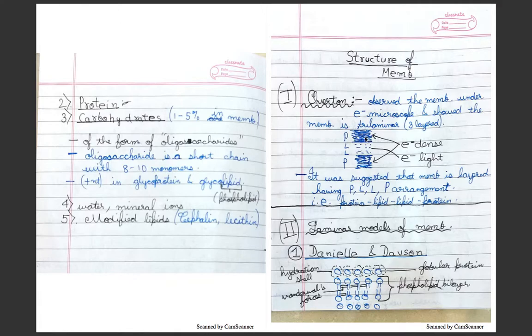He said that the electron dense medium, then there was an electron light medium, and then again dense medium, alternately. He suggested that the membrane had a layering of PLLP arrangement, that is protein-lipid-lipid-protein, which was further explained by laminar models of plasma membrane.